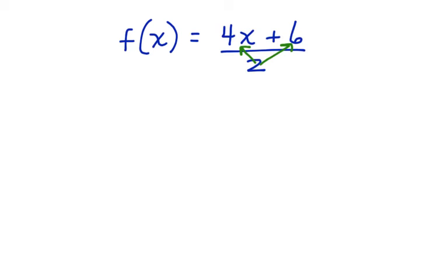We have to simplify the right side of this function. So now we have the function of x is equal to 2 into 4x is 2x plus 2 into 6, which is 3. And now we have a slope of 2 and a y-intercept of positive 3. Now let's graph this line.